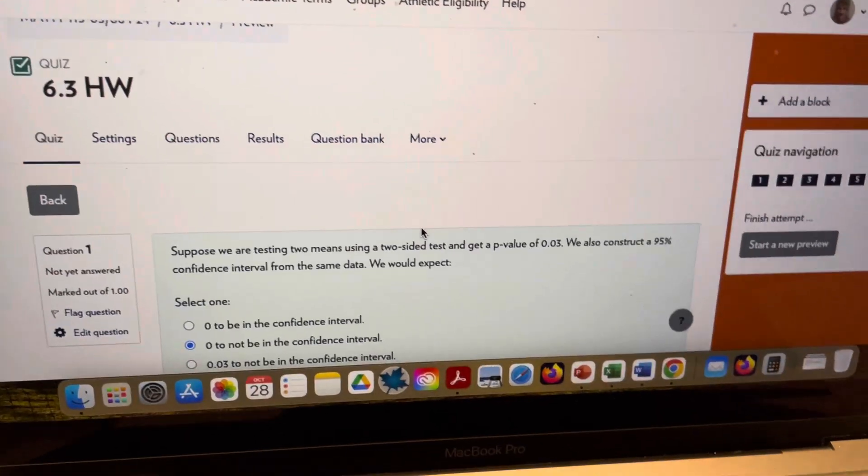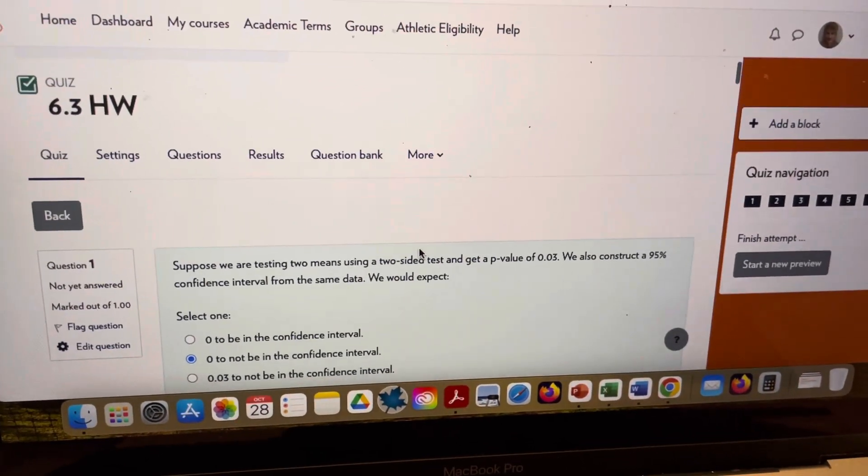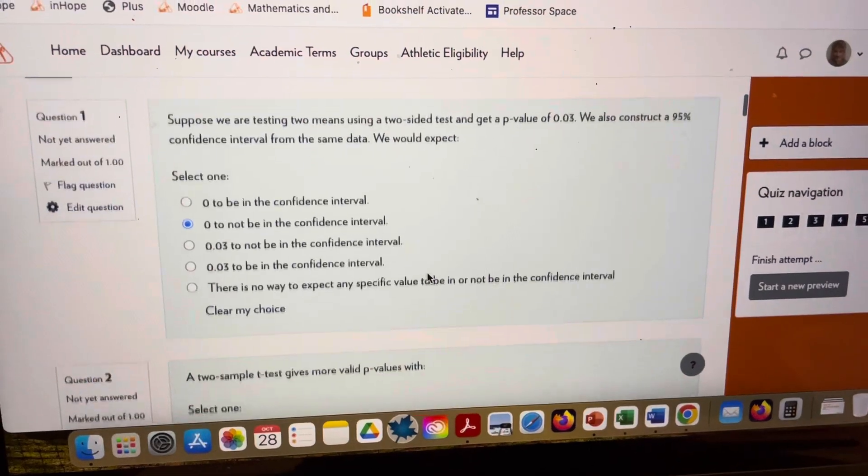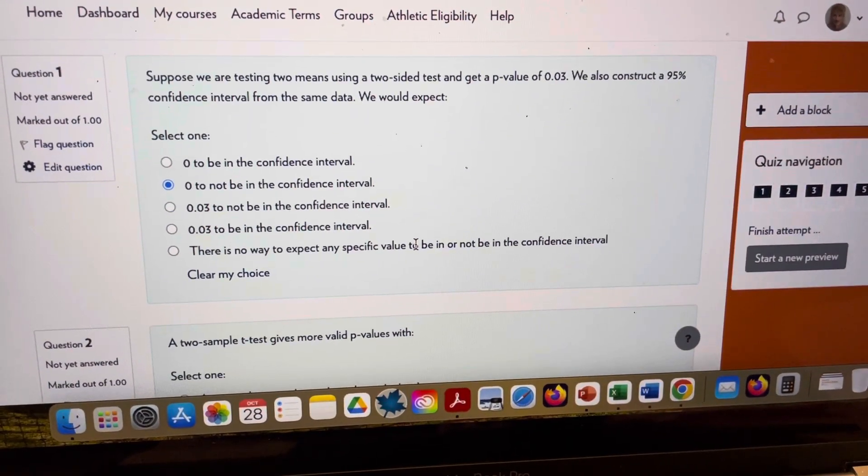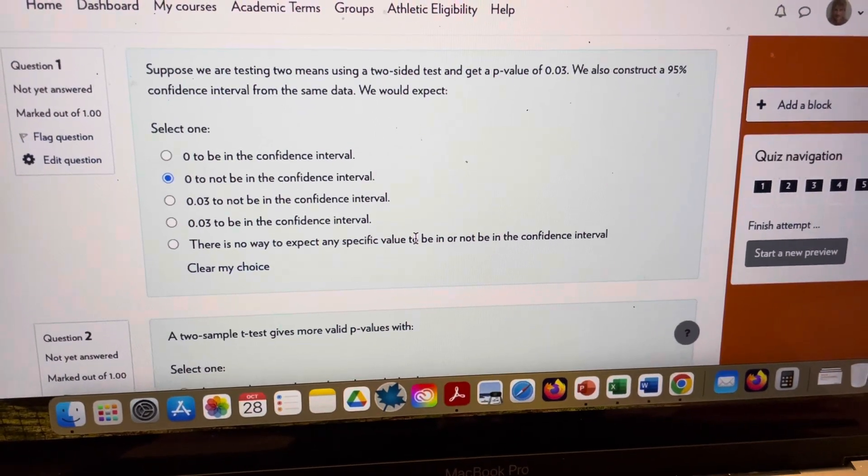Hi everybody. I'm going to make a couple of videos on 6-3 homework. Suppose we're testing two means using a two-sided test and get a p-value of 0.03.